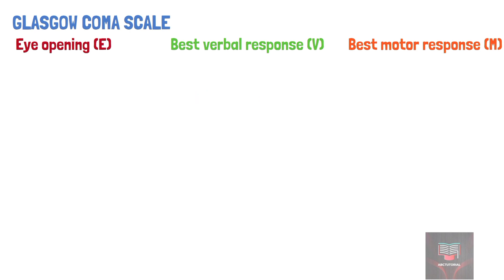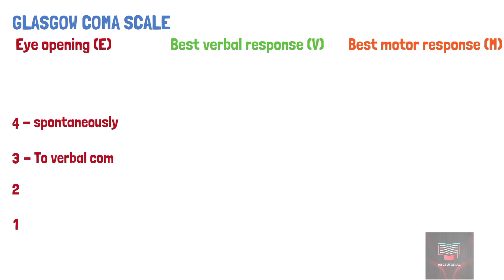The eye opening score ranges from 1 to 4 and is scored as follows. A score of 4 is given when the eye opens spontaneously. It is scored 3 when the eye opens to verbal command, and 2 when the eye opens to painful stimulus, and scored 1 when there is no eye opening.